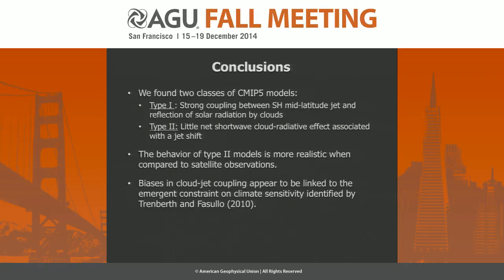So to summarize: I found two classes of CMIP5 models — one in which there's a strong coupling between the jet and cloud radiative effect, and one in which there really isn't — and it seems to be that the type 2 models are more realistic. I showed that the biases in this jet-cloud coupling may be linked to the relationship of climate sensitivity that was noted in the CMIP3 models. That's something we're currently investigating, and I'd be happy to discuss further details with people afterwards. Thanks everyone for staying past 6 o'clock.